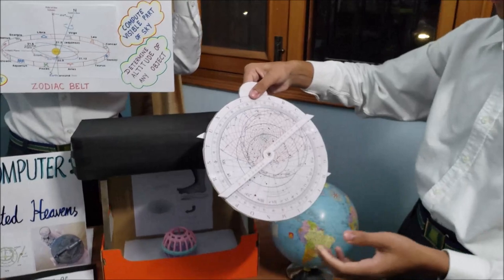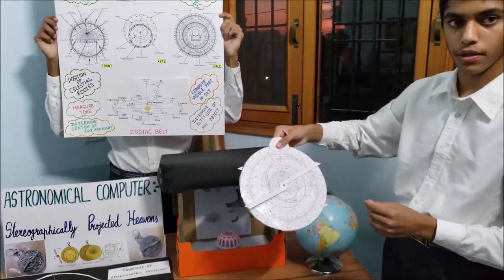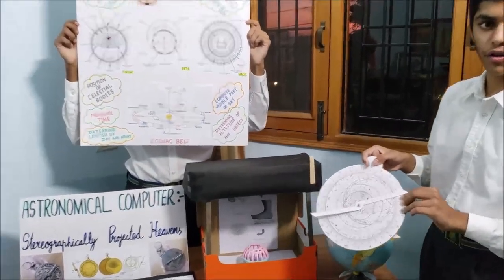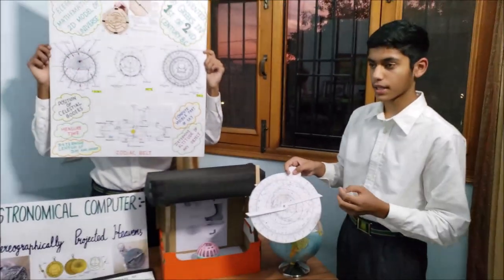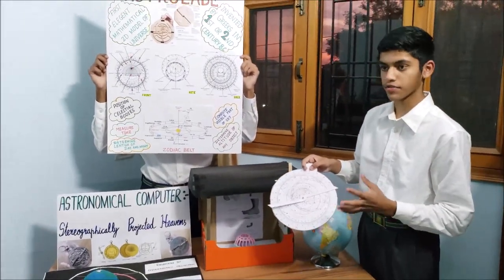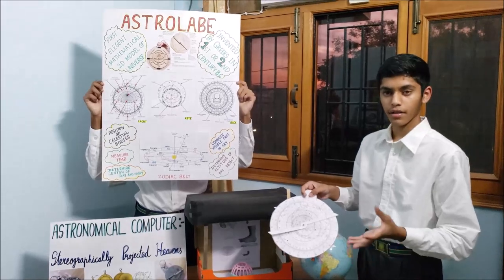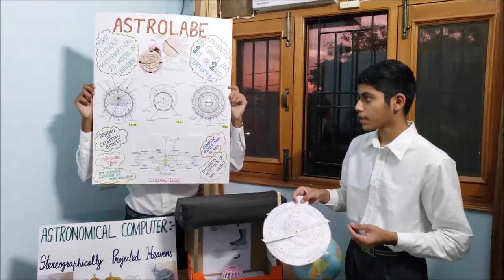So this is only one use of the astrolabe to measure the local time. The other uses of the astrolabe include telling the time of sunrise, telling the time of sunset, measuring the altitude of any building, etc.